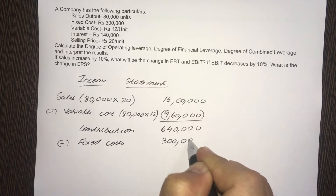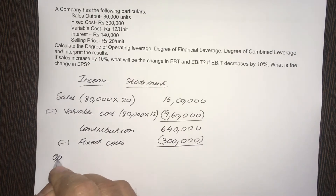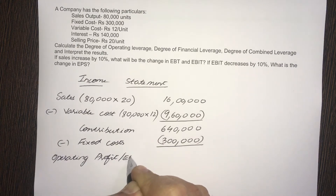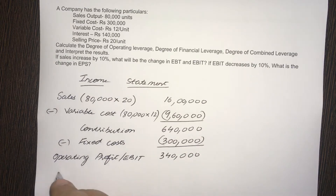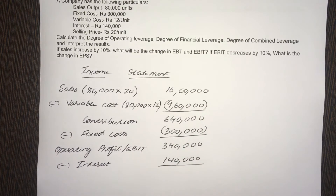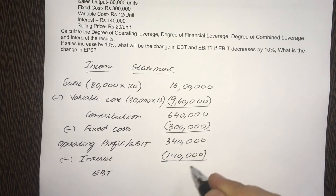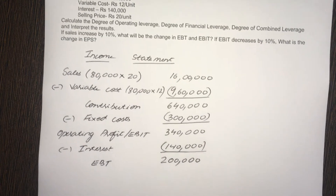Fixed cost is 3,00,000. After that, you get operating profit or EBIT, and we are left with 3,40,000. Minus interest payment — interest is given as 1,40,000. So the EBT, earnings before tax, will be 2,00,000.